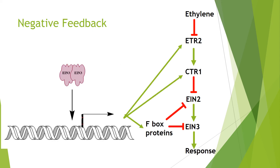Negative feedback is an important part of any signaling response to prevent over-activation. Here, it's mostly carried out by EIN3 transcriptional induction of negative regulators of the ethylene pathway. First, we have induction of the receptors like ETR2, and also of the serine-threonine kinase CTR1, and these all lead to an increase in EIN2 phosphorylation, preventing cleavage of the C-terminus so it can't move into the nucleus and can't stabilize EIN3.